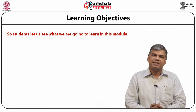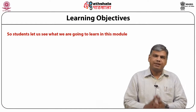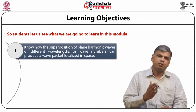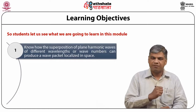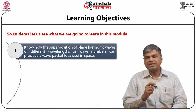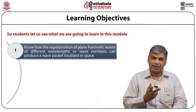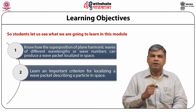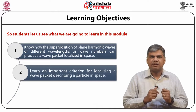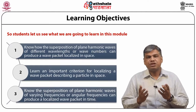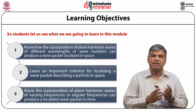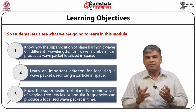Let us see what all we are going to learn in this module. Firstly, we'll try and know how the superposition of plane harmonic waves of different wavelengths or wave numbers can produce a wave packet localized in space. Then, we'll learn an important criterion for localizing a wave packet describing a particle in space. Thirdly, we'll know how superposition of harmonic waves of varying frequencies or angular frequencies can produce a localized wave packet in time.